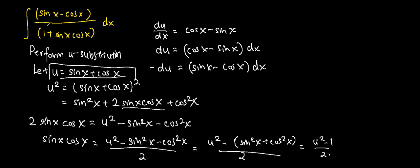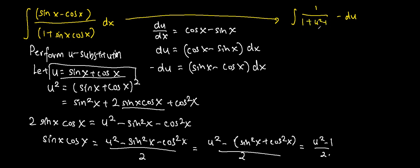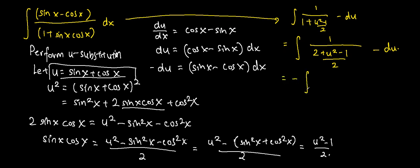Now we can substitute sin x minus cos x dx and sin x cos x in terms of u. The numerator sin x minus cos x dx becomes negative du, while sin x cos x in the denominator is u squared minus 1 over 2. So we do something to the denominator: this is equivalent to the integral of negative du over 2 plus u squared minus 1 over 2, which simplifies to negative integral of 1 over u squared plus 1 over 2 du.